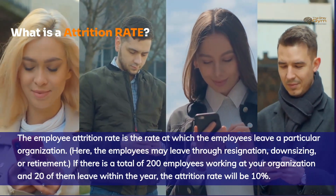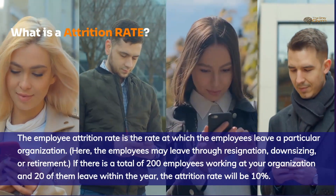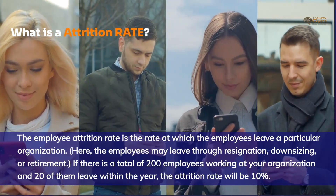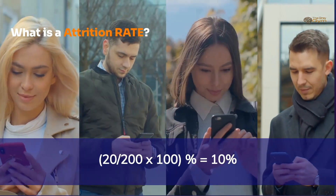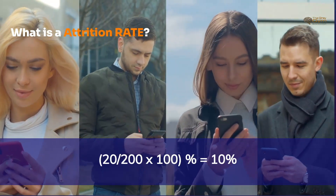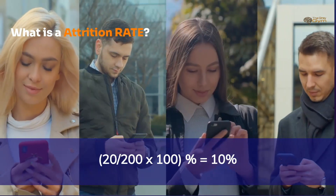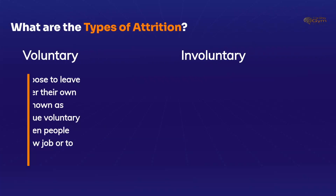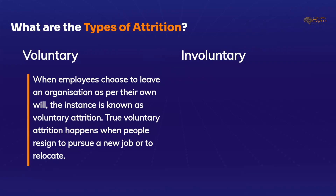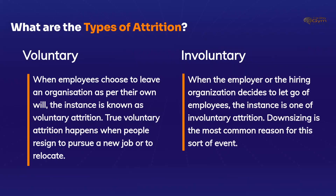For example, if there is a total of 200 employees working at your organization and 20 of them leave within the year, the attrition rate will be 10%. We can use a formula to calculate the annual attrition rate. Furthermore, we can break down attrition into two types: voluntary attrition and involuntary attrition. When employees choose to leave an organization of their own will, this is known as voluntary attrition — true voluntary attrition happens when people resign to pursue a new job or relocate. When the employer decides to let go of employees, this is known as involuntary attrition, and downsizing is the most common reason for this.